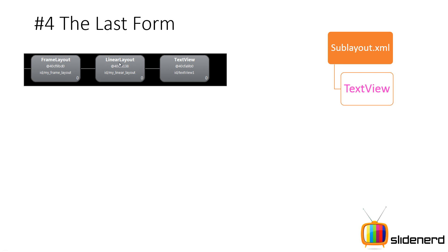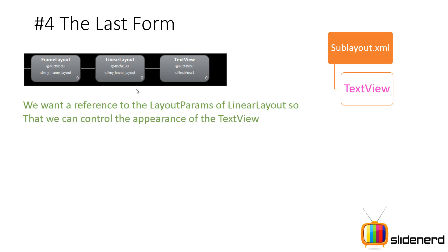For example if you have a RelativeLayout and put a TextView inside and want to align it to the right side, what happens if the TextView doesn't align after you set alignParentRight? You'd be frustrated wondering why it isn't working. So you want the TextView to obey the commands and constraints set by the LinearLayout. For that we need a reference to the layout params object of the LinearLayout so we can control the appearance of the TextView. These are the two important points that the next method solves.